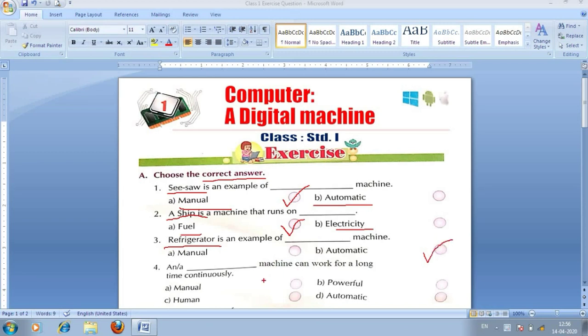Next c, fourth number. And, or a dash, machine can work for a long time continuously. Yarni ki, koon si machine, laagataar lambe samay ke liye kaam kar sakti hai. Option a, manual machine, option b, powerful machine, option c, human machine, or option d, automatic machine. Toh, zahir si baat hai, babu, ki, d number option, jo hai, bilkul hi sahi hai. Chuki, laagataar, jo hai, automatic machine hi, laagataar lambe samay ke liye kaam kar sakti hai.